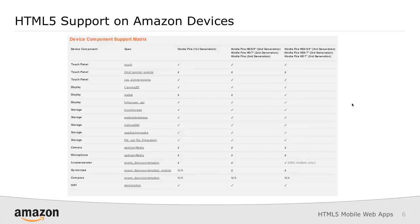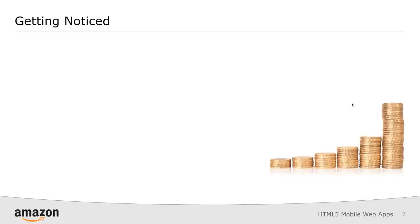There's also built-in HTML5 support for a bunch of different APIs. If you're using touch events, CSS pointer events, Canvas 2D, or WebGL, you're going to see all of that just built in. You can get the current chart right off of the developer portal.